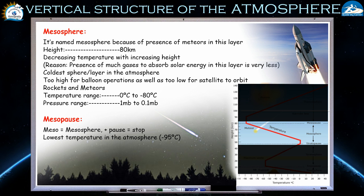The reason for this temperature decrease is that there are not many gases in the mesosphere to absorb solar energy, so the warming effect is very low. That is why the mesosphere becomes the coldest layer in the atmosphere — the lowest temperatures in the entire vertical section of the atmosphere are found here. It is also too high for balloon operations and too low for satellites to orbit, though rockets and meteors can be observed.